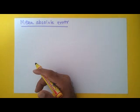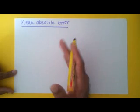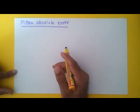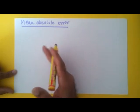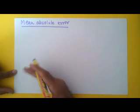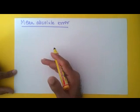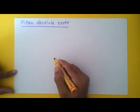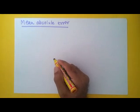In a previous video, I talked about two types of errors: systematic errors and random errors. In this video, we are going to look at measuring those errors and getting an idea about that error.